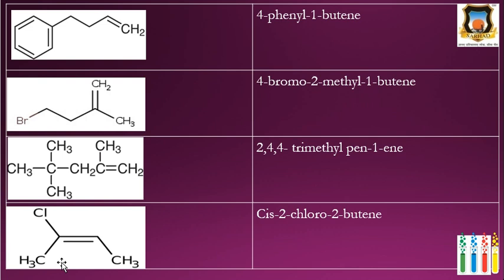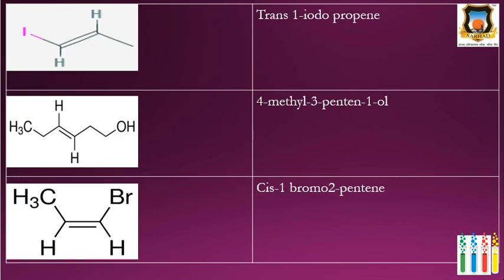In the next example, chlorine is present and numbering starts from the end nearest the double bond: 1, 2, 3, 4 — it is 2-butene. The two CH₃ groups are on the same side of the double bond, so it is the cis isomer. The chlorine is at the second carbon as a substituent, giving the name cis-2-chloro-2-butene.